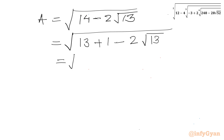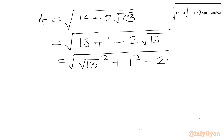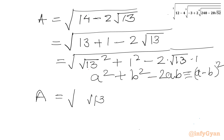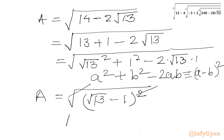We can write 13 as (√13)² and 1 as 1², and the middle term is 2 times √13 times 1. This is again a² + b² − 2ab, which we write as (a − b)². So A equals square root of (√13 − 1)², and the square root and square cancel, giving A = √13 − 1.